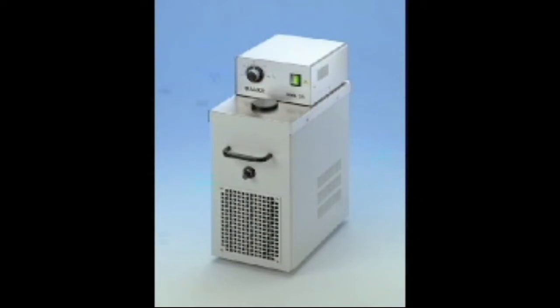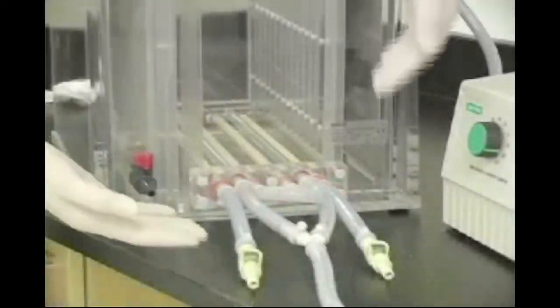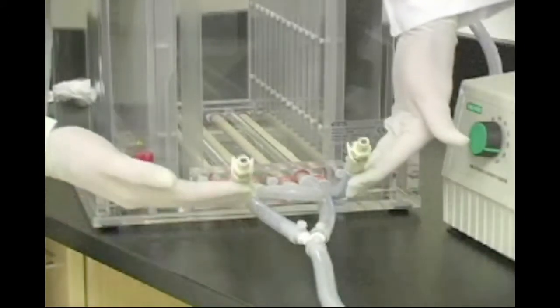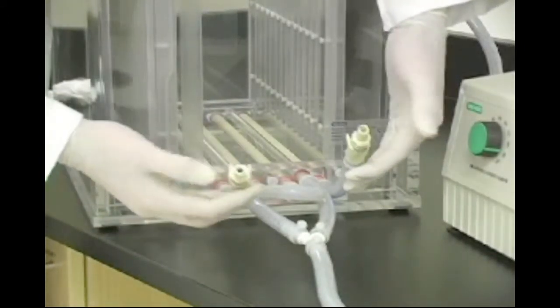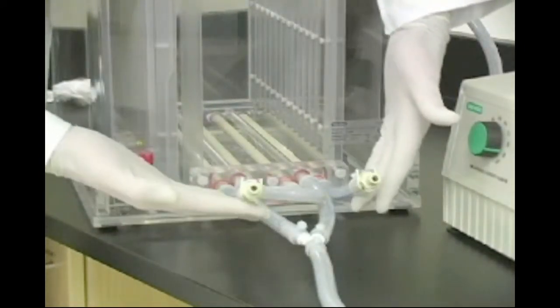A refrigerated circulator is required for optimal results and works in conjunction with the buffer recirculation system to provide efficient cooling. The Protean Plus DodecaCell has a built-in ceramic cooling core that must be connected to a refrigerated circulator that can maintain the buffer temperature at 18 to 20 degrees Celsius during electrophoresis. Three-eighths of an inch ID tubing can be connected from these fittings to the inlet and outlet on the circulator.